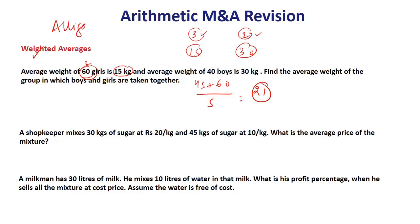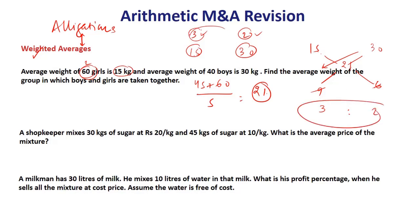Allegations is nothing but the inverse of weighted average. If the average of the girls is 15, average of the boys is 30, and the final average is 21, then using allegation you take the differences: 21 minus 15 is 6, and 30 minus 21 is 9. Simplified, the ratio is 3 is to 2 — the same ratio as before. So if you have the individual averages and the final average, you can calculate the weights or ratios using allegations.